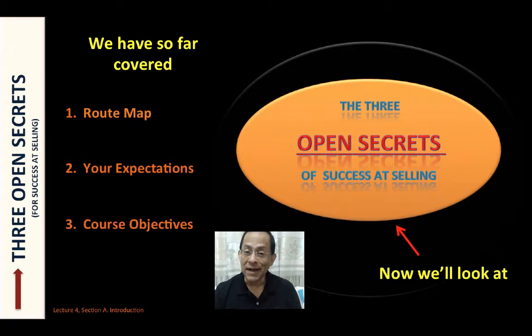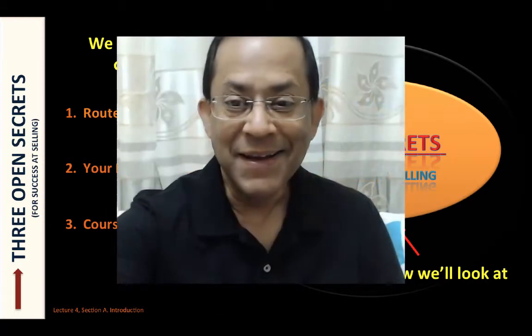Now we are going to look at the three open secrets of success at selling — and more about selling — but the main thing is the three open secrets. Let's go to secret number one. You don't need to really take a pencil and paper to jot it down; just focus on what we are talking about and really try to understand the concept from the depth of it.